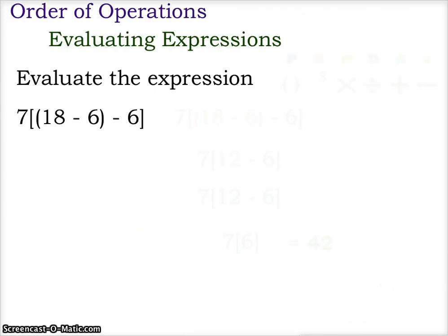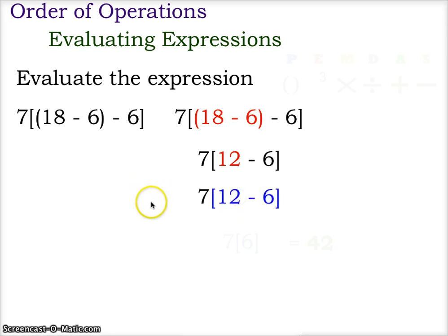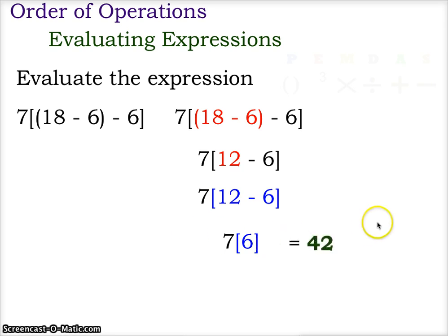So let's start with this basic expression: 7 times the quantity of the quantity 18 minus 6, minus 6. We begin with the innermost grouping symbol first — the parentheses — and do 18 minus 6, which gives us 12. Now we have 7 times the quantity 12 minus 6. We do the brackets next: 12 minus 6 gives us 7 times 6, and 7 times 6 gives us 42.